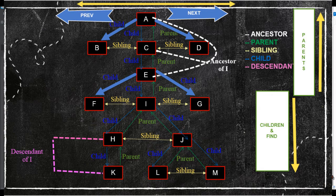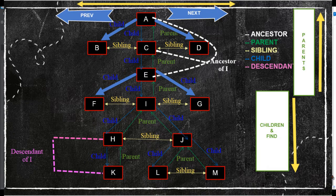Next in the list are next, nextAll, and nextUntil. Next gets the immediately following sibling — not the preceding one; for preceding we use prev. If a selector is provided, it retrieves the next sibling only if it matches. NextUntil gets the following siblings up to but not including the element specified as the argument — that exclusion is very important, and the same concept applies to parentUntil and prevUntil. NextAll gets all the following siblings, optionally filtered by a selector.